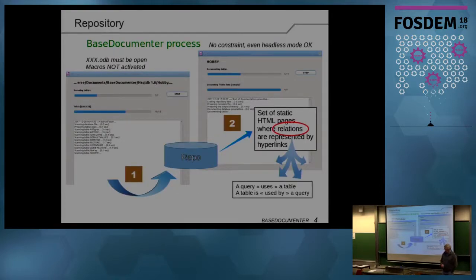So the process is quite easy. The user opens its database file ODB file, starts with a button or menu item, starts the execution of a process. The ODB file must be opened without the macros activated. So the database is scanned. It is the first step. And everything is stored in the repository.